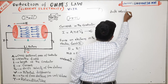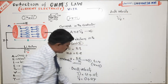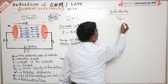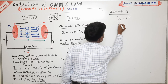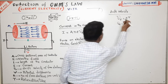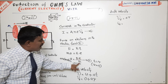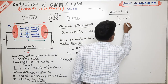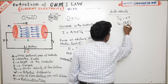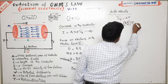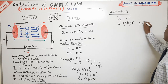The final drift velocity is: Vd equals A·τ, which equals (eE/m)·τ — capital E is the electric field, small e is charge of electron, m is mass, and τ is relaxation time. This is equation number 3.